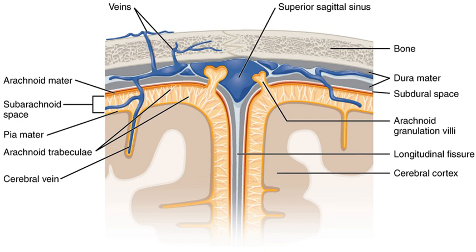The arachnoid is composed of an outermost portion, the arachnoid barrier cell layer, with tightly packed cells and no extracellular collagen. That is why it is considered to represent an effective morphological and physiological meningeal barrier between the cerebrospinal fluid and subarachnoid space and the blood circulation in the dura. The arachnoid barrier layer is characterized by a distinct continuous basal lamina on its inner surface toward the innermost collagenous portion of the arachnoid reticular layer.